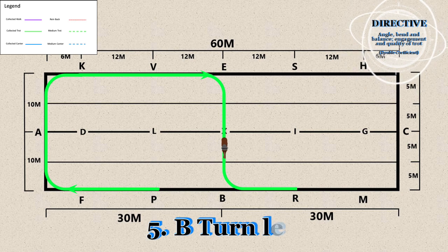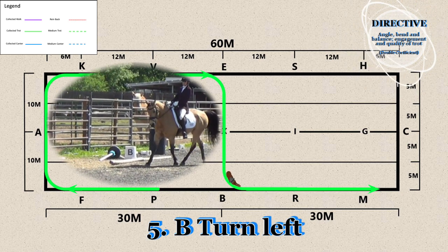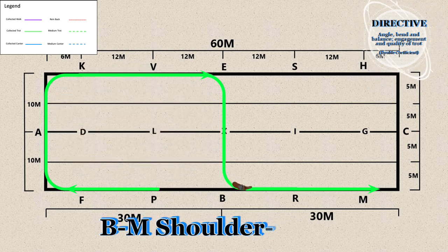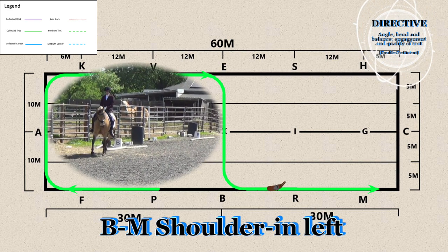5. B - Turn left. B through M - Shoulder in left.